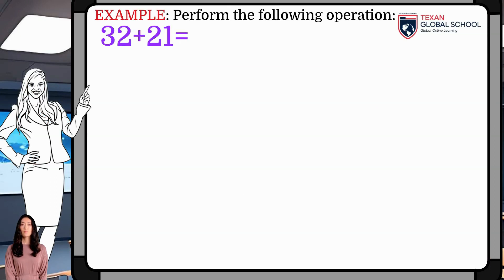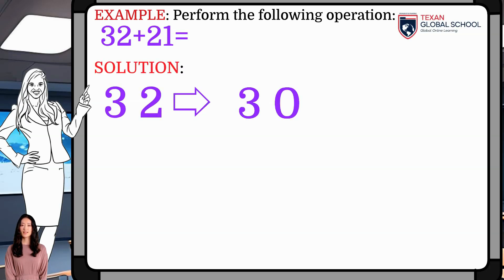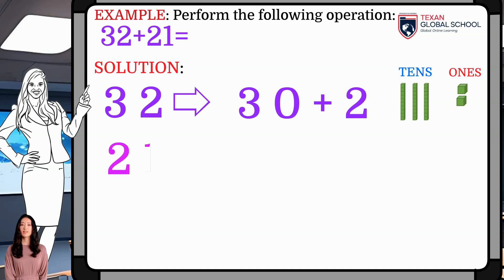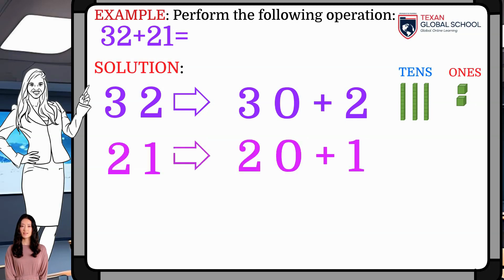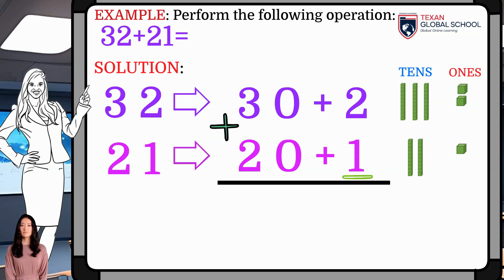We will perform the addition of 32 plus 21. First, decompose each addend into 1s and 10s. 32 has 2 1s and 3 10s. 21 has a 1 and 2 10s. We will use the bars in each case to see the model. Then draw a line below to perform the addition.